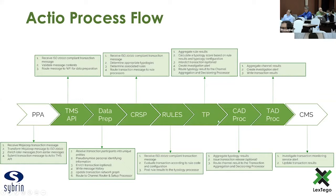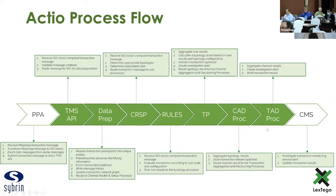We also compose the rules and typologies across a number of different themed channels based on your operational requirements. We could theme a channel according to speed or available resources. If you wanted a channel that could respond quickly to interdict a transaction in flight, you would create a specialized channel optimized to run very fast and focus only on the rules and typologies needed for an interdiction process. Channels then feed into the overall transaction aggregation and decisioning processor, where we take all results from rules, typologies, and channels, and combine that into a final result sent to a case management solution.